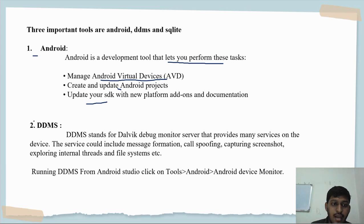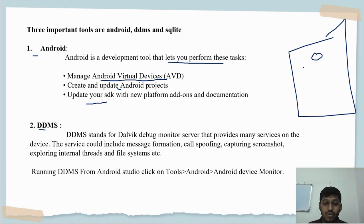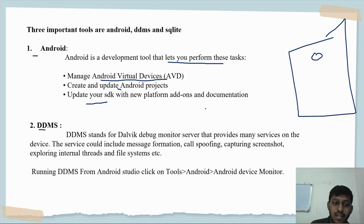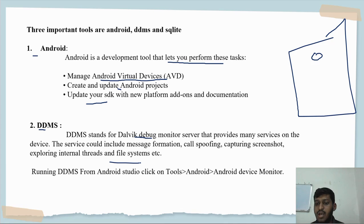DDMS - what is it? The mobile shown on your screen is the virtual device. All the functionalities of a real mobile - like taking screenshots, browsing the internet, scrolling, and typing messages - all these functions available on your physical device need to be brought to the virtual device. DDMS does that. DDMS stands for Dalvik Debug Monitor, which provides many services on the virtual device, including message formatting, calls, capturing screenshots, exploring internal data, and the file system.